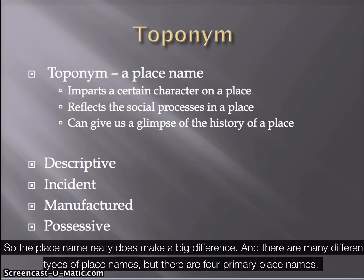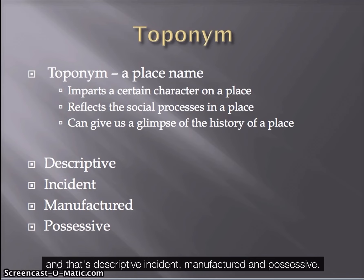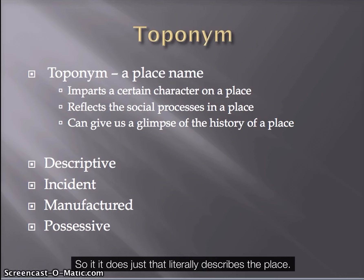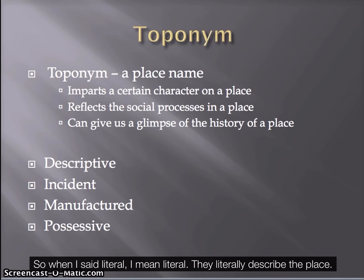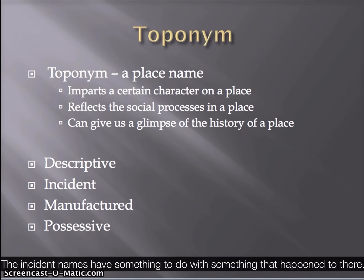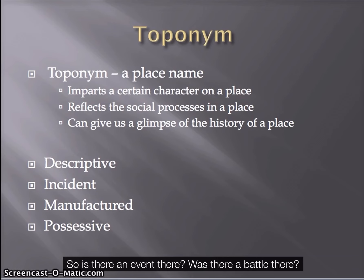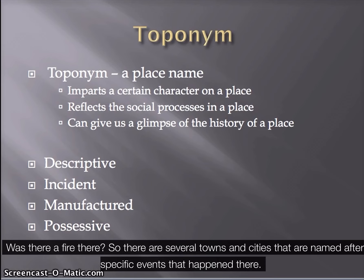There are many different types of place names, but four primary ones: descriptive, incident, manufactured, and possessive. A descriptive place name literally describes the place — the Grand Canyon is a grand canyon, the Rocky Mountains are rocky mountains. Incident names have to do with something that happened there — a battle, a fire, a specific event. There are several towns and cities named after specific events that occurred there.